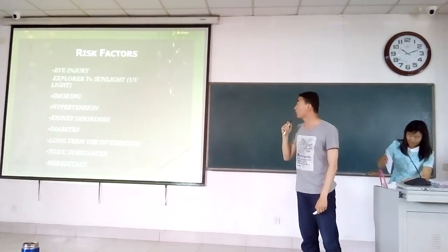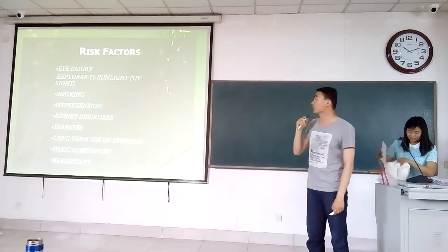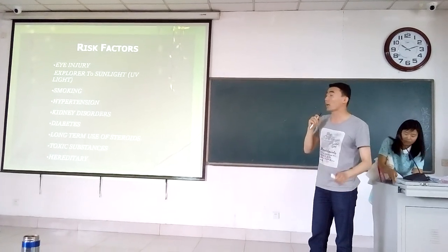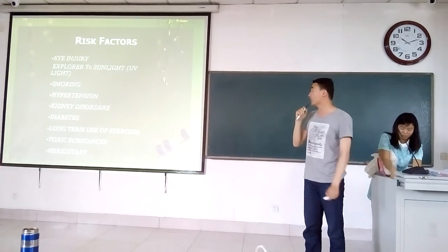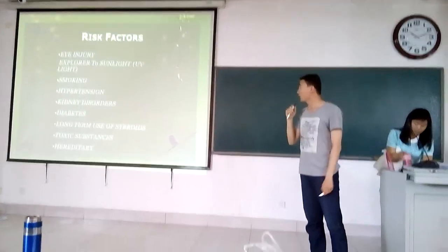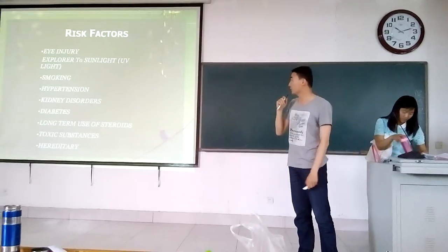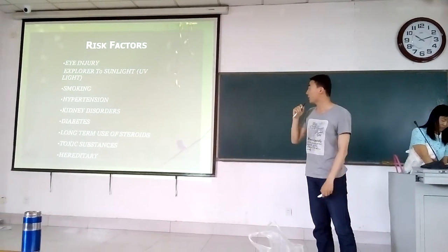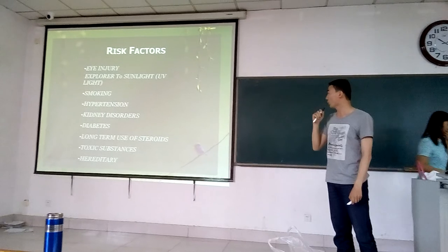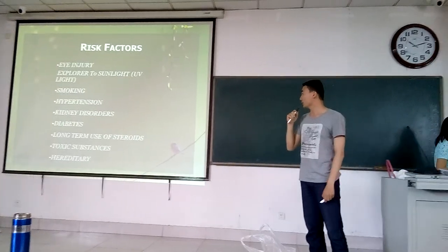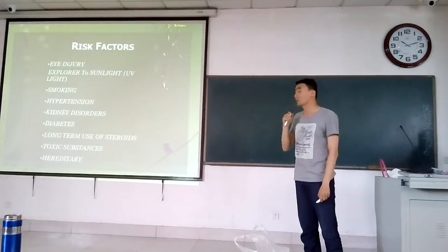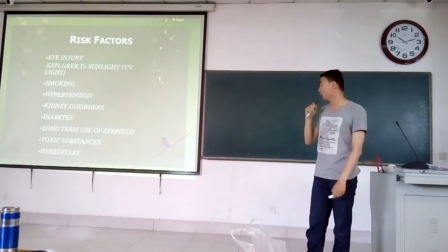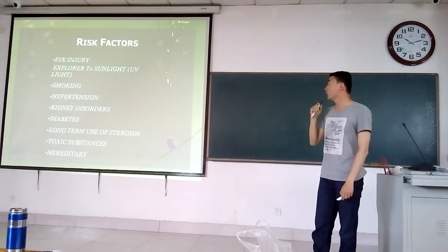The second part is risk factors. First, eye injury. Exposure to sunlight, especially UV light. Smoking, hypertension, kidney disorders, diabetes, long-term use of steroids, toxic substances. The last is very unfortunate — it comes from the patient's father and mother. It's hereditary.